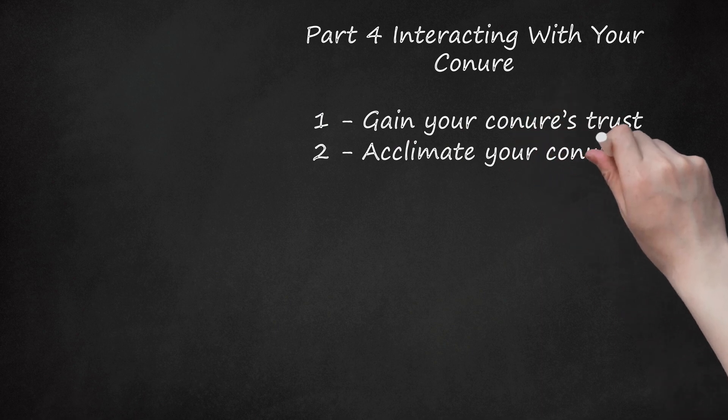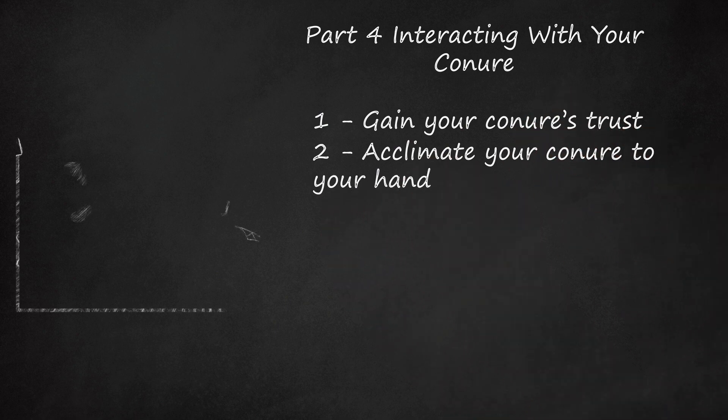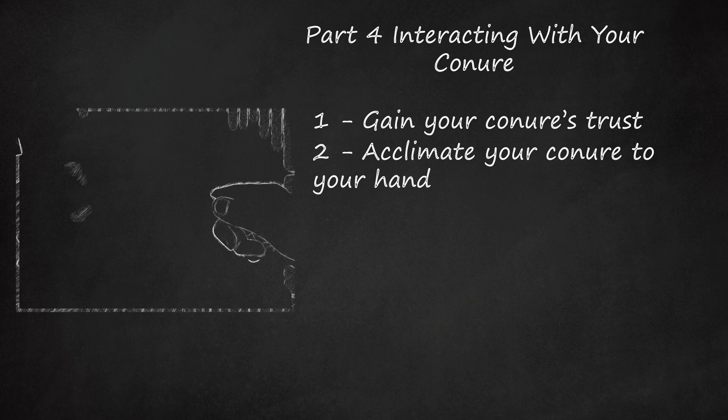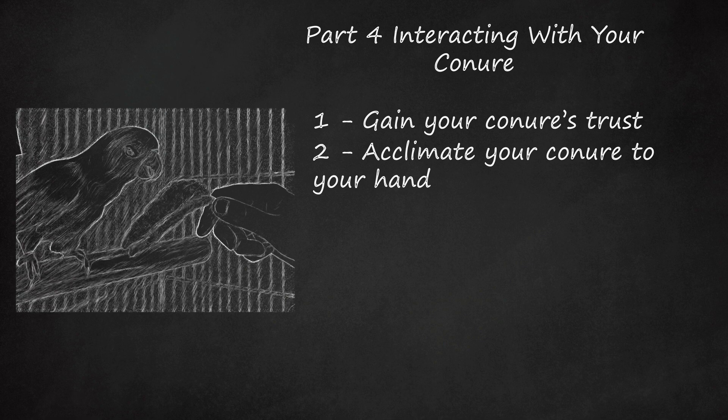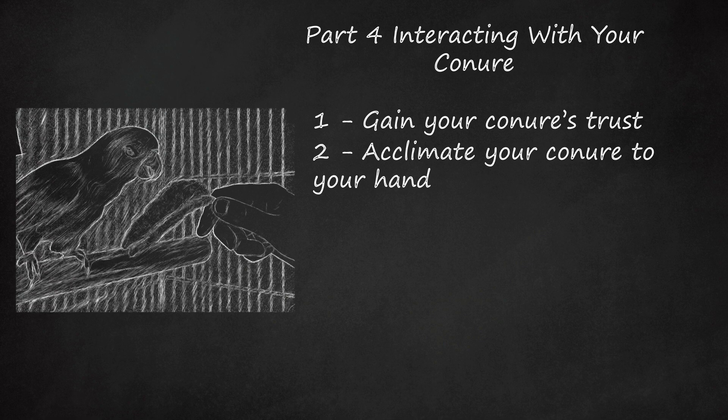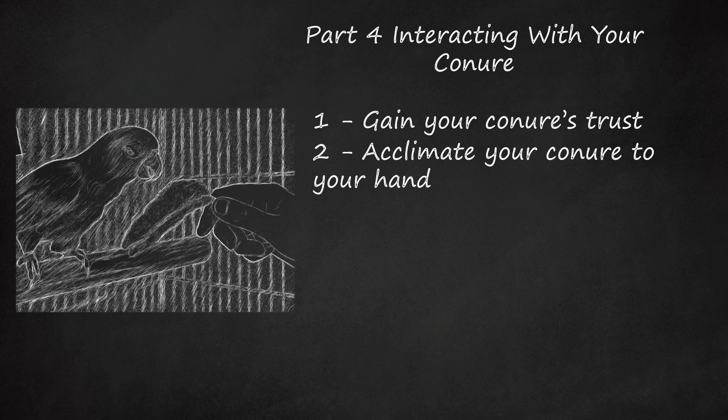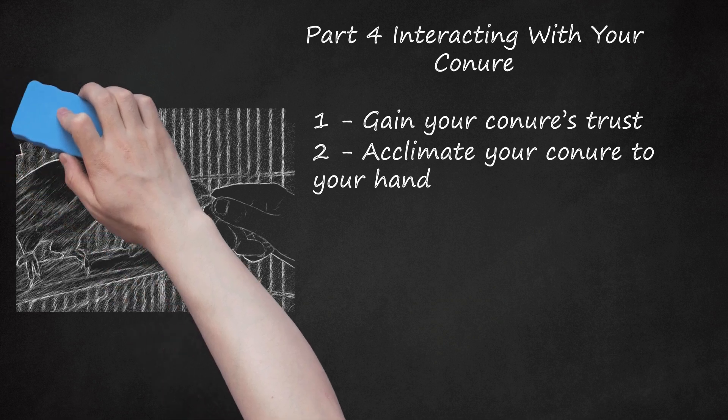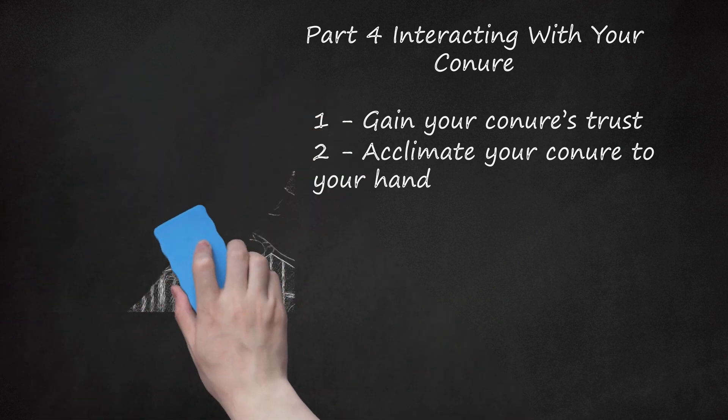Acclimate your conure to your hand. In addition to trusting you, your conure will also need to be comfortable with your hand. Begin by gently placing your hand either on or near the outside of his cage. Talk to him while you hold your hand nearby to calm his anxiety. When your conure is comfortable with your hand outside his cage, slowly place your hand inside his cage. Hold some treats, like millet spray or dark leafy greens, in your hand and keep your hand still while he approaches and explores your hand. It may take a few days or a few weeks before your conure is comfortable with your hand. Just be patient with him.